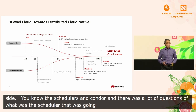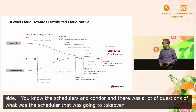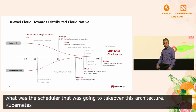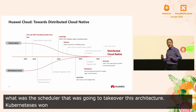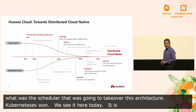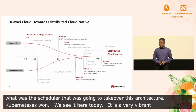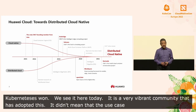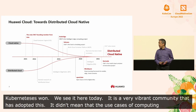Well, of course, we know how that played out. Kubernetes won — we certainly see that here today. It's a very, very vibrant community that's adopted this. But it didn't mean that the use cases around distributed computing disappeared. It just meant that the focus shifted towards cloud native.